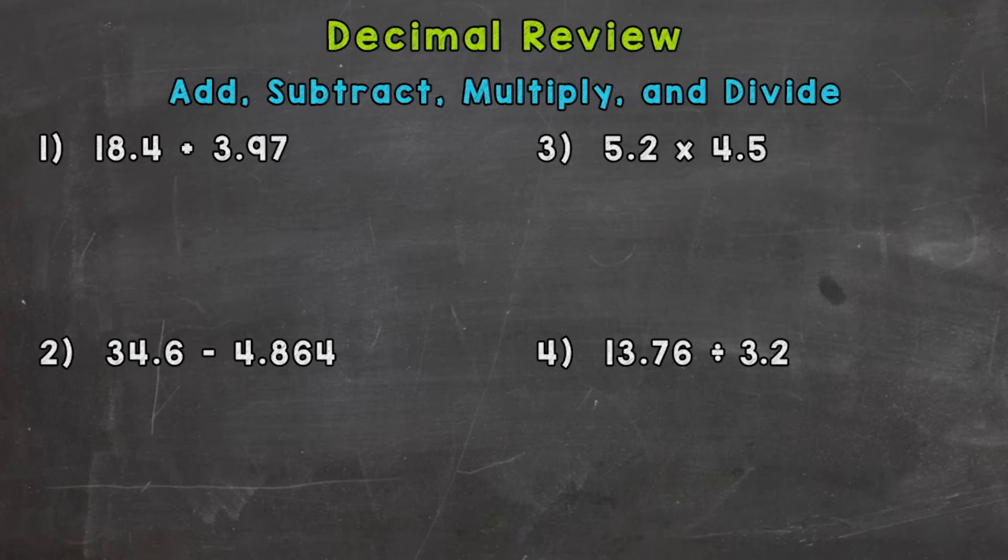So 18.4 plus 3.97. For adding and subtracting decimals, the most important part is lining the problem up correctly, and you do that by lining up your decimals. So 18.4 plus 3.97. Now the problem looks a little offset. That's fine. We can use placeholder zeros because zeros to the right of a decimal do not change the value. So I can put a zero here to the right of that 4 and it doesn't change the value. It's an equivalent decimal. So now it looks a little neater and more lined up. So once you have your decimals lined up and any placeholder zeros put into place, we can just add.